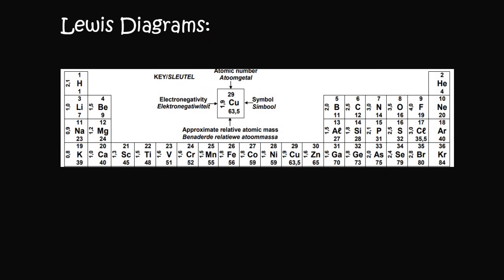Let's say we want to draw a Lewis diagram of fluorine. Fluorine is in group one, two, three, four, five, six, seven. The way it works is you draw separate electrons in four separate locations — that has to do with the different orbitals surrounding atoms. Then once you've done those four, if there are any leftover electrons you can start pairing them up: five, six, and seven. That is the Lewis diagram of fluorine.